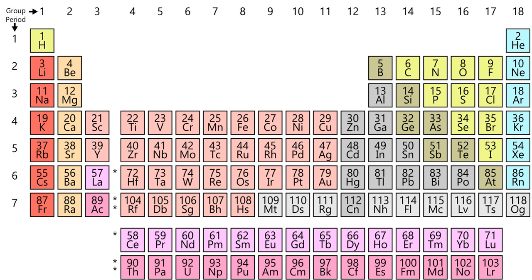Group 12 elements are often considered to be transition metals, however, zinc, cadmium, and mercury share some properties of both groups, and many scientists believe they should be included in the main group.